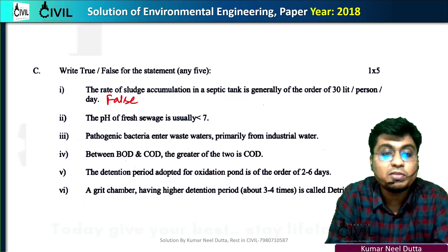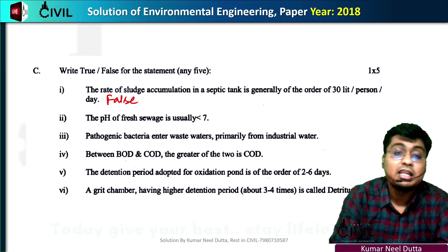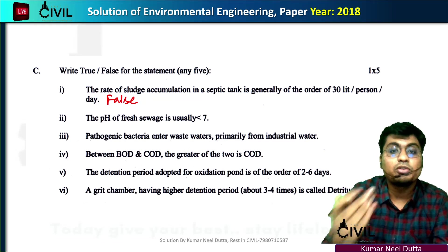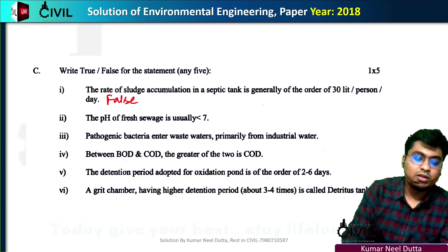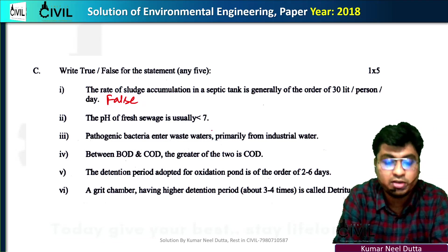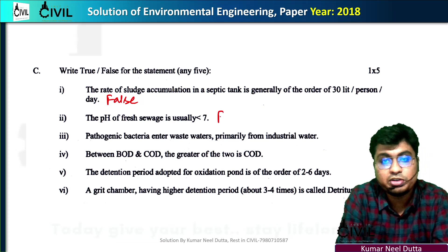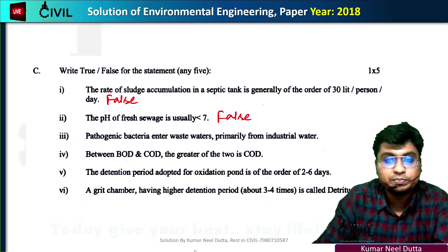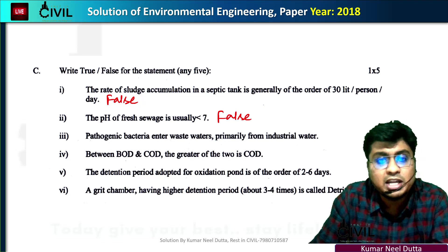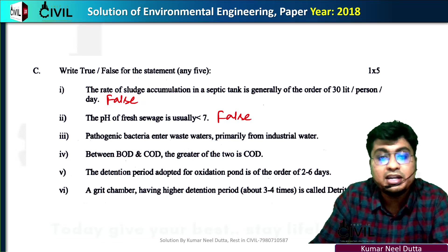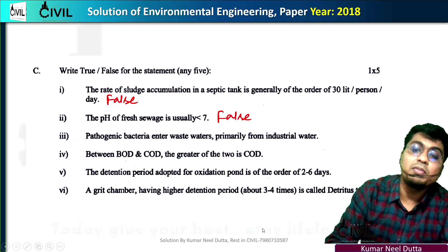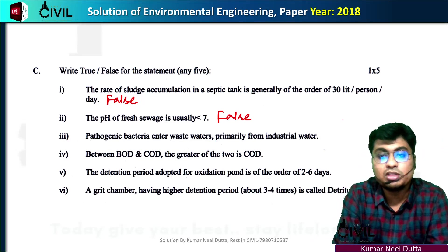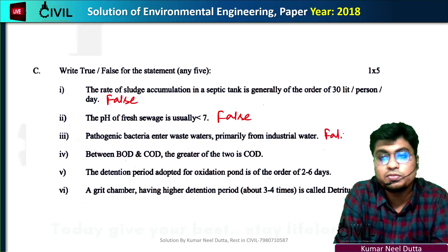The pH of fresh sewage is usually more than 7 or less than 7 — this statement is false. Pathogenic bacteria enter wastewater primarily from industrial water — this is also false, as they come from domestic water.